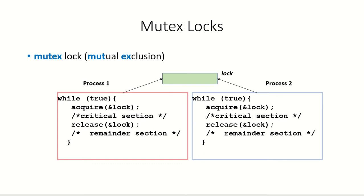Mutex locks are software solutions to help in synchronization of processes which wish to enter a critical section. It is short for mutual exclusion.